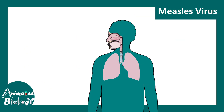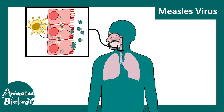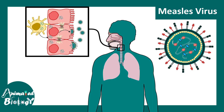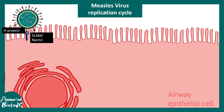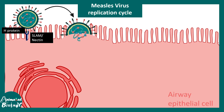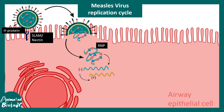Since negative sense RNA virus replication is more complex, we will take measles virus as a detailed example. The upper respiratory cells are affected by measles virus. Measles virus enters with the help of SLAM or nectin-type receptors. The virus fuses with the membrane and releases the ribonucleoprotein into the cytosol, which then releases the negative sense RNA.